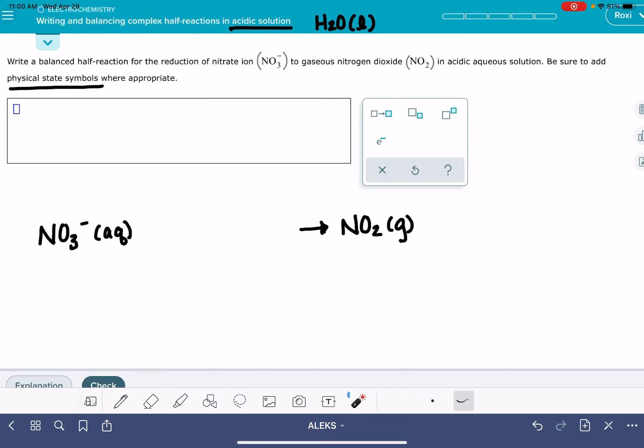Step one is to balance everything other than oxygens and hydrogens. So for us, that would mean balance the nitrogens. We have one on the left, one on the right. Looks good.